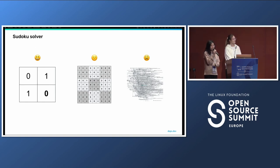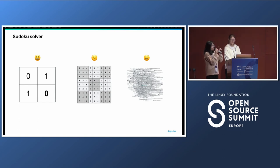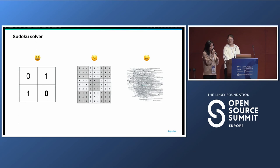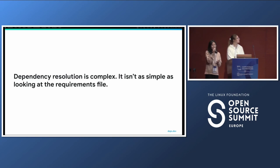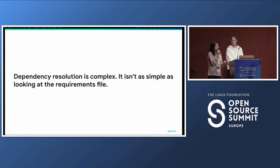9x9 Sudokus are more complex than 2x2 Sudokus, but real dependency resolution is even more complex. Sudokus are actually quite easy for dependency resolvers because in Sudoku only 9 versions are possible per package and there are only 81 packages. But in real-life dependency resolution, there can be hundreds if not thousands of versions for a package, and often hundreds of packages in a dependency graph. The point is that dependency resolution isn't as simple as looking at the requirements file — the resolver is doing a lot of work behind the scenes, and you need to look at the concrete set of dependencies it produces, not just the requirements file.